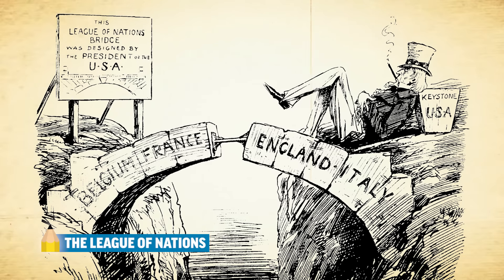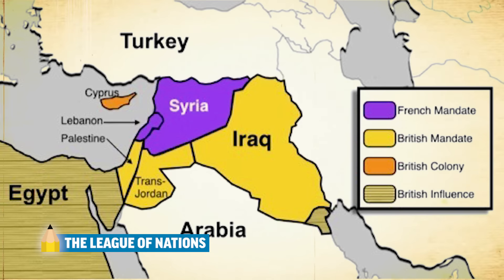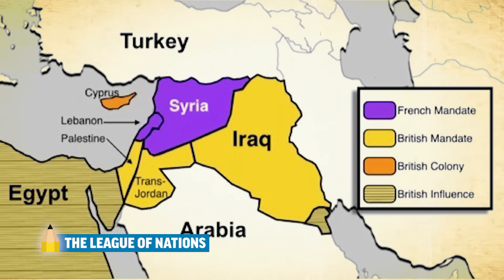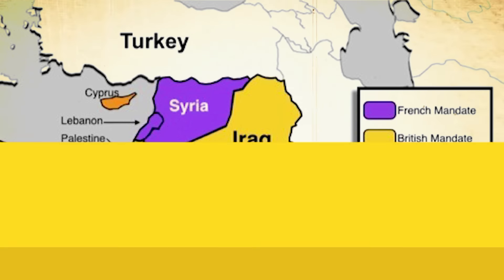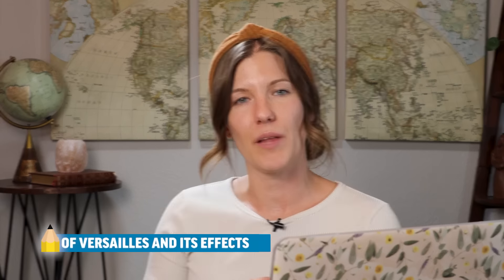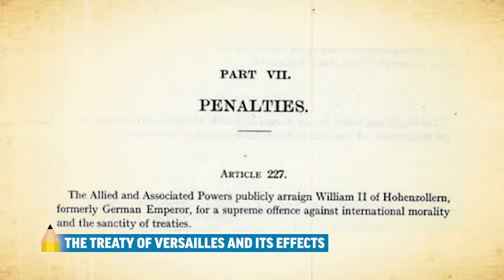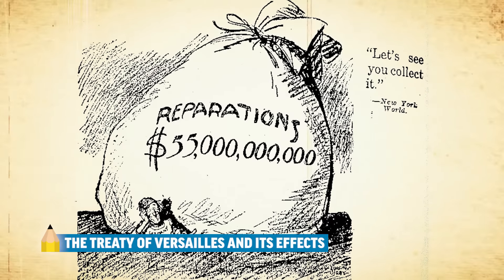In order to prevent future war, US President Woodrow Wilson proposes a League of Nations, which ultimately fails because the US, Germany, and the Soviet Union do not participate. However, this League of Nations does divide up former German and Ottoman-controlled land in the mandate system — think of this as a Berlin Conference 2.0. The Treaty of Versailles places much of the blame for World War I on Germany and forces Germany to pay billions of dollars in reparations.